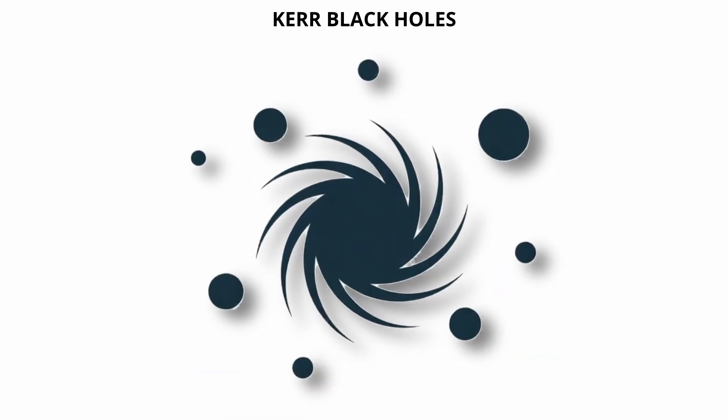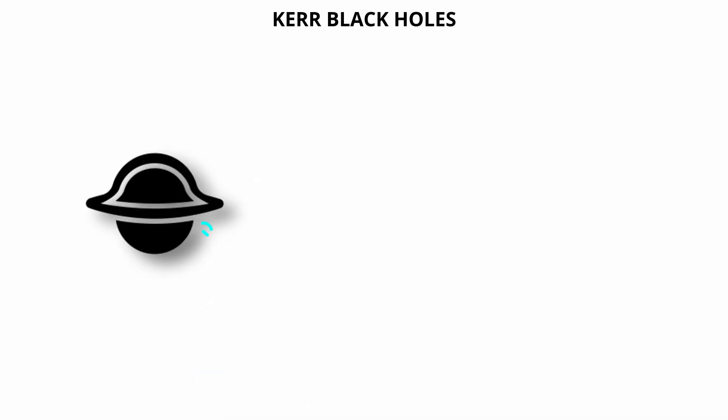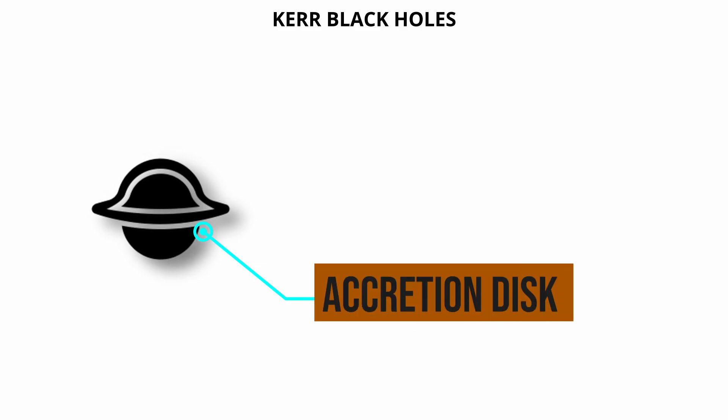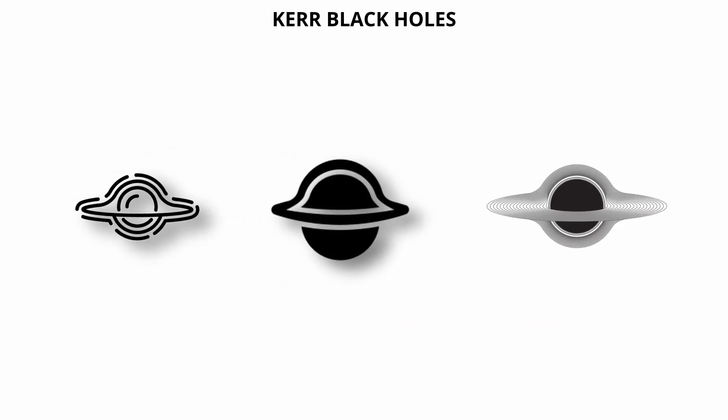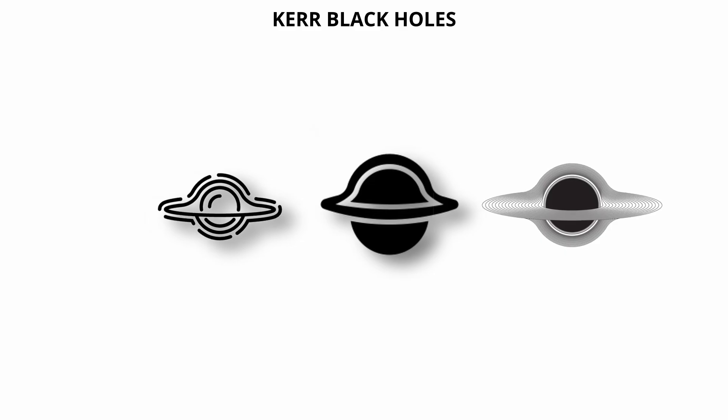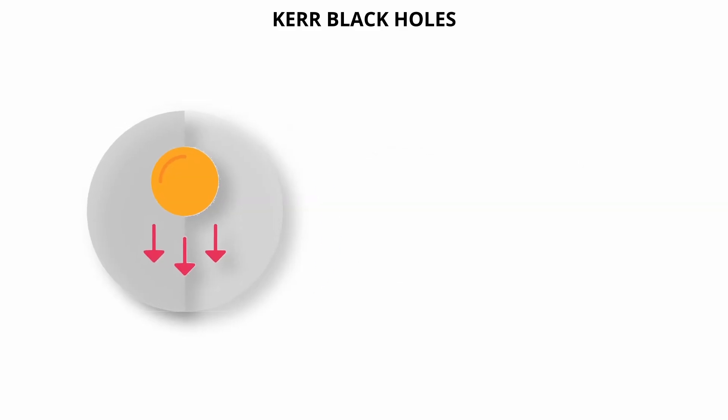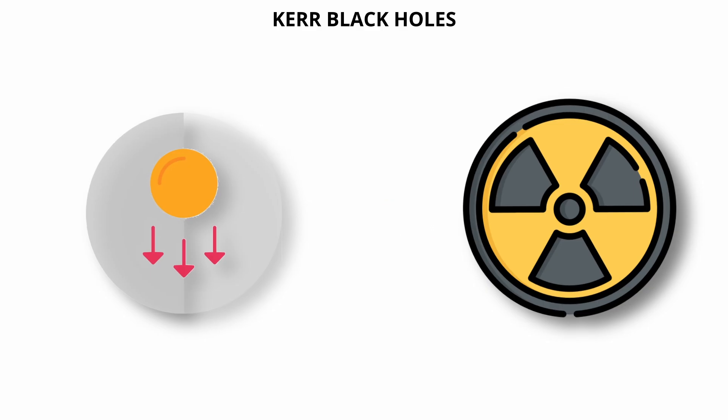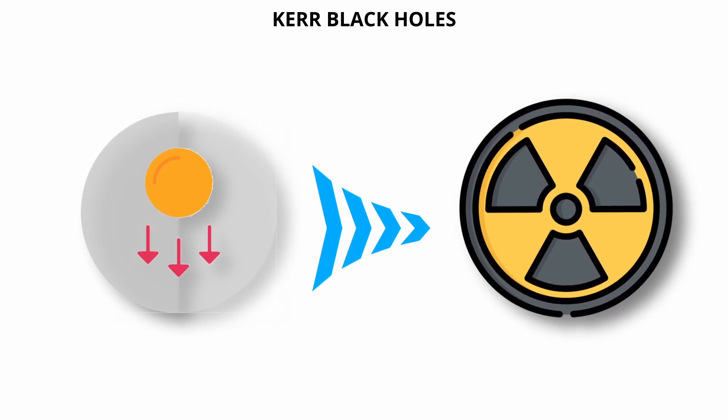Rotation significantly affects how matter behaves around the black hole. For example, the inner edge of an accretion disk can move closer to a rapidly spinning Kerr black hole than to a non-rotating one. This allows more gravitational energy to be converted into radiation, making accretion disks around Kerr black holes some of the most efficient energy sources in the universe.